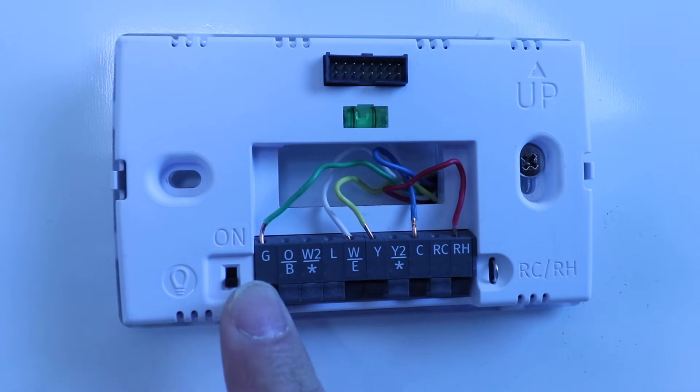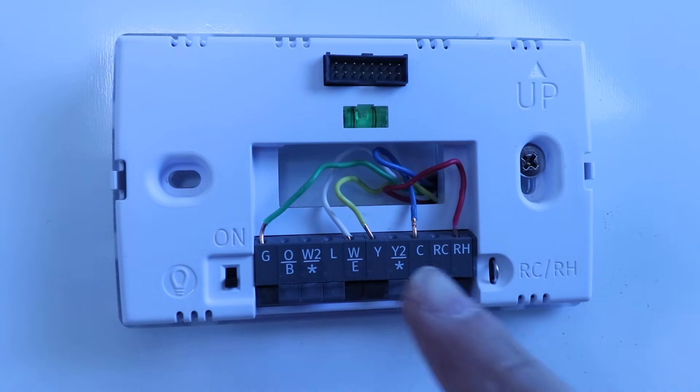The G wire is our fan wire and the OB wire that's for heat pumps, but we don't have that here. The W2 wire is going to be for second stage heating. The L wire, we don't use that here. We've got a W wire that is for first stage heating. We've got a Y wire that's for air conditioning. We've got a Y2 wire that's for second stage air conditioning. And we've got our C wire or common wire right here, which is often required for smart thermostats.